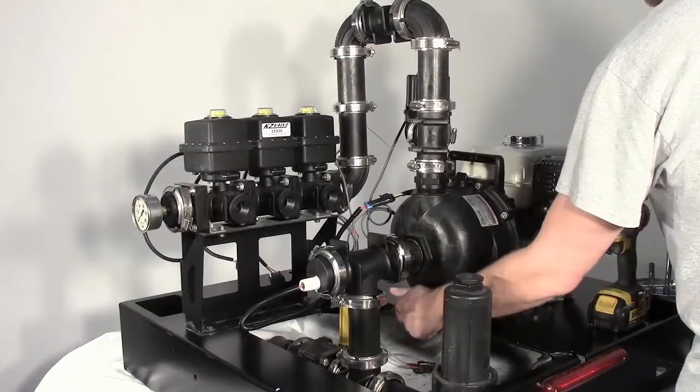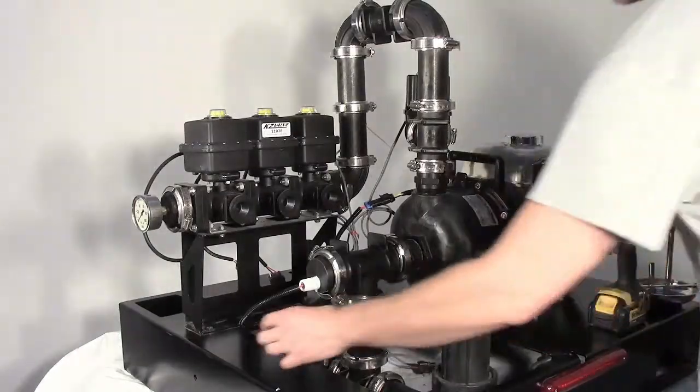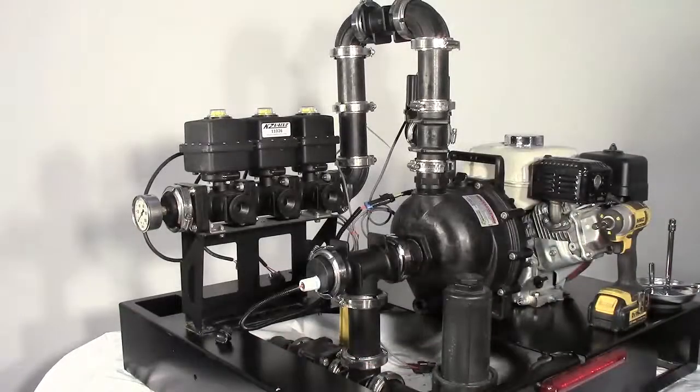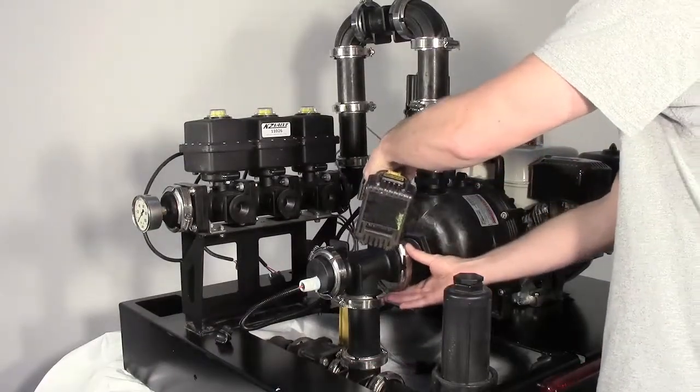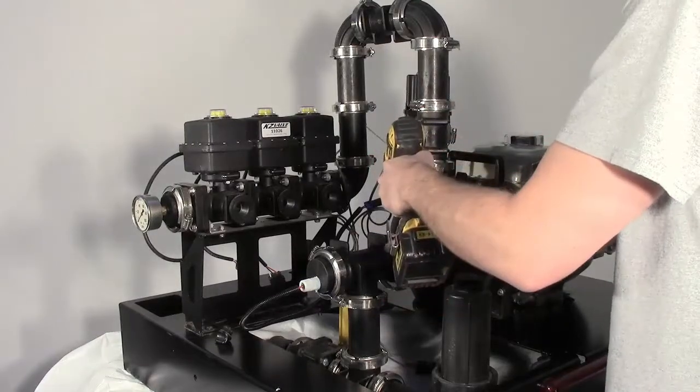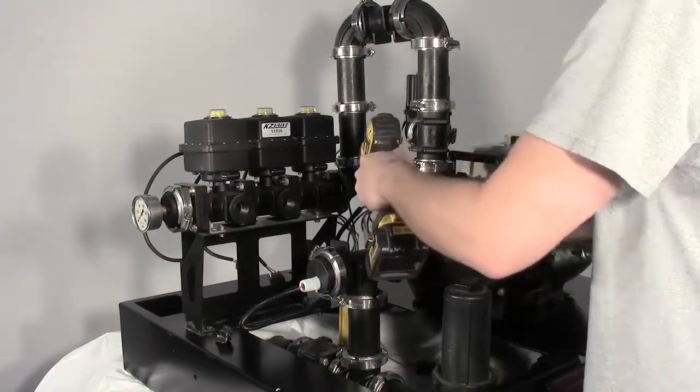Drain the pump housing by removing the drain plug. Remove the two stainless steel band clamps connected to the pump inlet and outlet. Save the band clamps and manifold gaskets for later use.